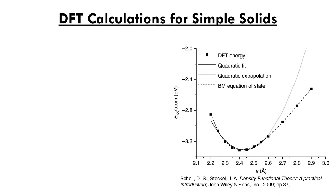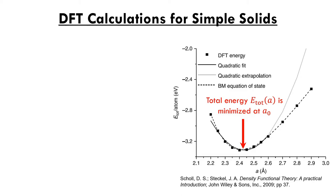Now that we understand how to define a supercell, we can examine how to predict using DFT the lattice constant observed in nature. This is accomplished by calculating the total energy of a material as a function of lattice spacing, E_total as a function of A. The result shows a curve with a single minimum at a value A0. Since nature always seeks to minimize energy, DFT predicts that the lattice constant of a material will be A0.